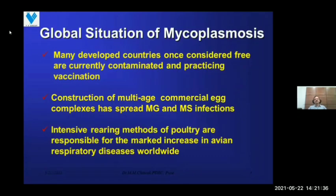Regarding the global situation of mycoplasmosis, many developed countries once considered free are currently contaminated and practicing vaccinations. Construction of multi-age commercial egg complexes has spread Mycoplasma gallisepticum and MS infections. Intensive rearing methods of poultry are responsible for the marked increase in avian respiratory diseases worldwide.